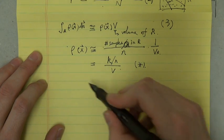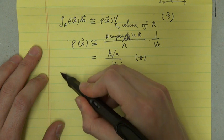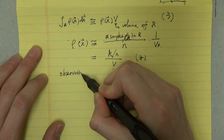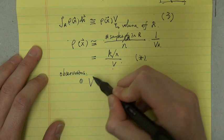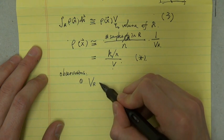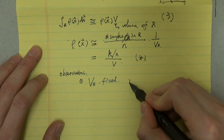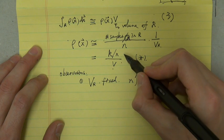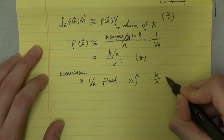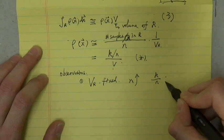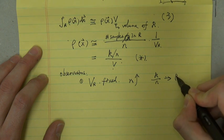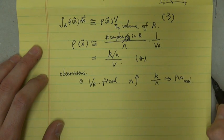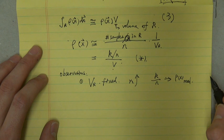if we fix the volume of R and increase the number of n, that means we have taken more and more training samples. Then the ratio of k divided by n will converge to the real probability we desired. But we only have obtained an estimate of the space average value of ρ(x⃗).